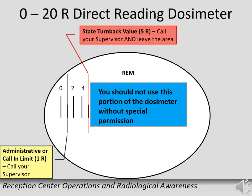This slide shows the scale of the 0 to 20 REM dosimeter and trigger numbers used to keep exposure as low as reasonably achievable. If the thin fiber line falls on the first line, this is your 1 REM administrative or call-in limit — call your supervisor to inform them, but continue to work while they attempt to replace you. If the line falls on the 5 REM area, this is your state turn-back value; you do not want to receive above this amount unless you have special permission.